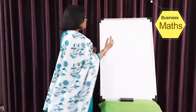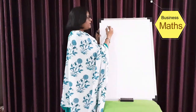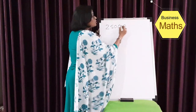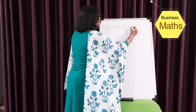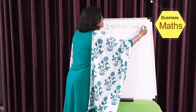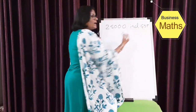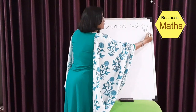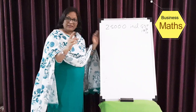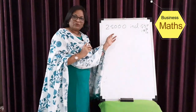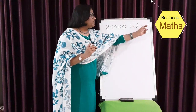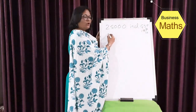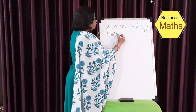In today's video we are going to understand how to find a basic value which is inclusive of some percentage. We'll understand this with one example. Suppose you have a product — 25,000 rupees is the cost of a product which is including GST, and the GST that you have paid is 18%. The cost of the product is 25,000 including 18% GST. Now you need to understand what is your before-GST cost.